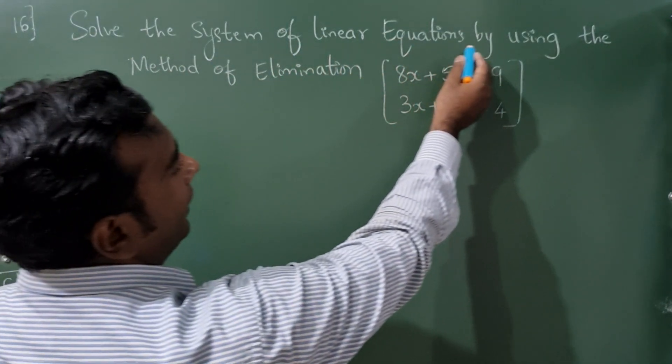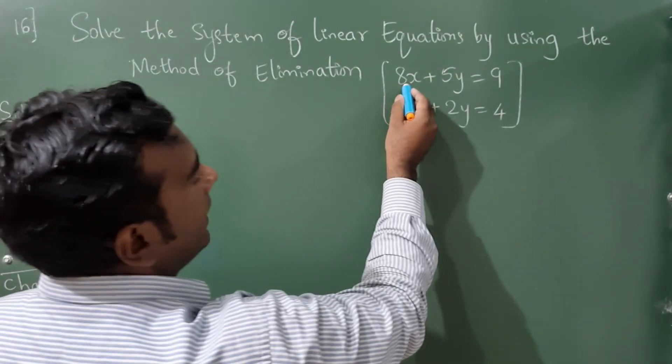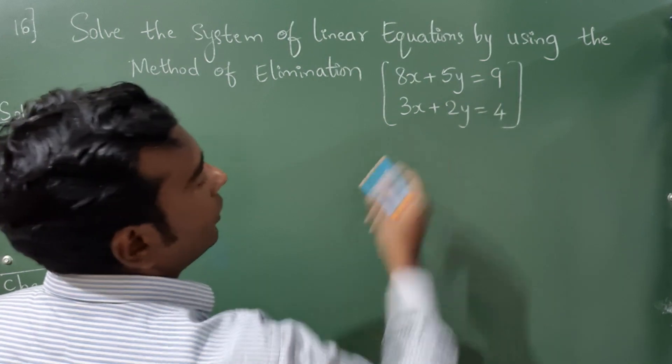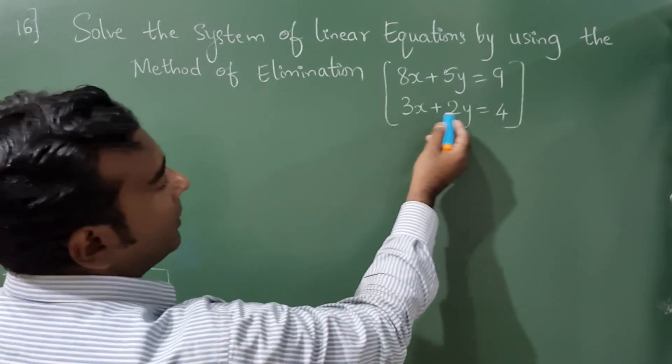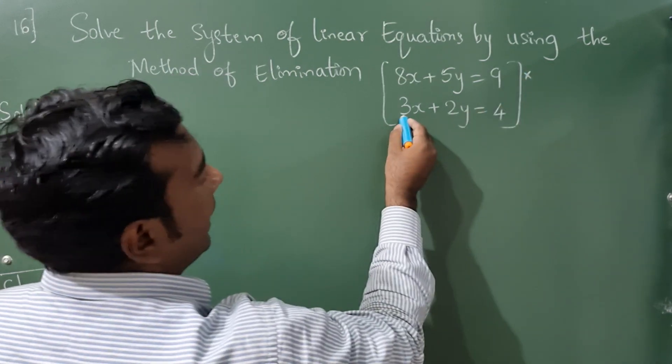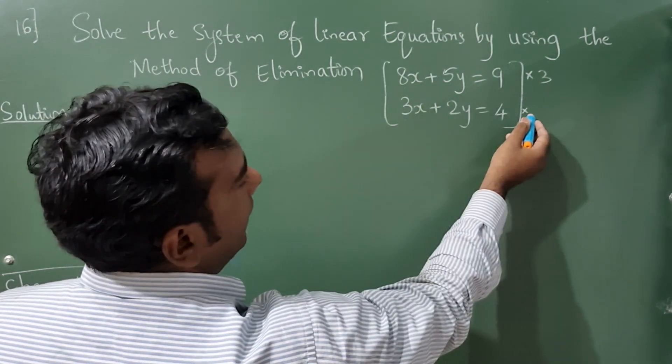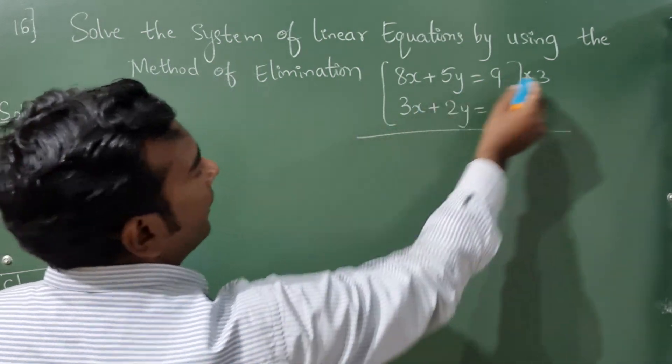Solve the system of linear equations by using the method of elimination. The question is: 8x + 5y = 9, and 3x + 2y = 4. Multiply the first equation by 3 and multiply the second equation by 8.